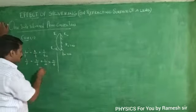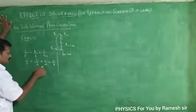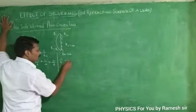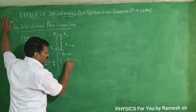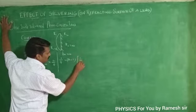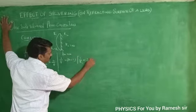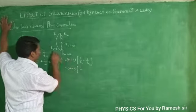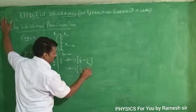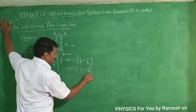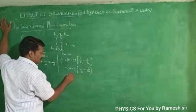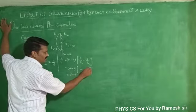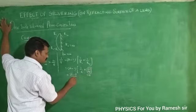Now, what about the reciprocal focal length of the lens? That is 1/f = (μ - 1) into (1/r1 + 1/r2). Since r2 equals infinity, the term 1/r2 equals 0, so we get 1/f = (μ - 1)/r.